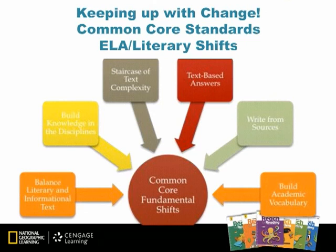Shift five is writing from sources. This shift is about finding evidence-based support to probing questions. The Reach for Reading daily writing questions and prompts support this shift. Shift number six is academic vocabulary. The daily spelling and word work in Reach for Reading supports this greater emphasis on Tier 2, or academic vocabulary, and Tier 3, content-specific vocabulary. I emphasize to teachers that these are not extra or separate, but rather Common Core State Standards, Daily 5 and CAFE, and Reach for Reading can all be integrated as one.